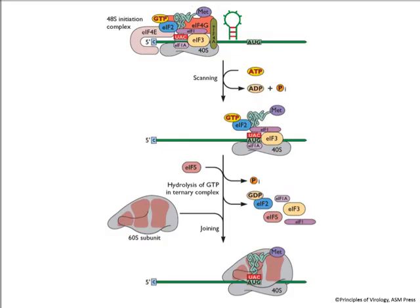Now we've got this big 48S initiation complex on the mRNA, and it starts to move down towards the AUG — that's called scanning. If there is secondary structure in the 5' UTR, the helicase activity of EIF4A will melt it out. Scanning requires energy through hydrolysis of ATP. Eventually the 40S subunit will reach the AUG codon, and the anticodon of the methionine tRNA — UAC — base pairs with it, signaling that initiation can begin.